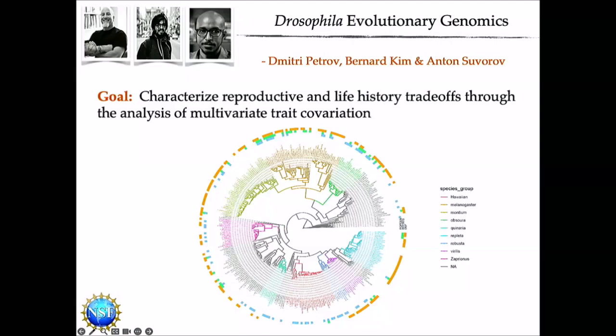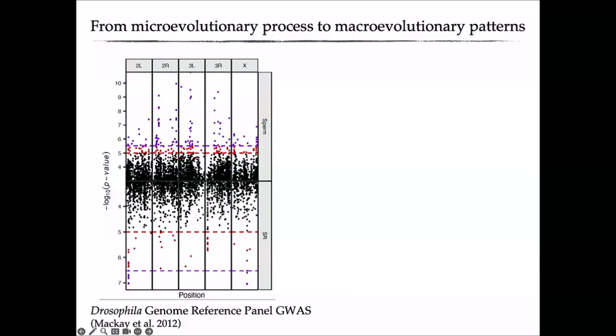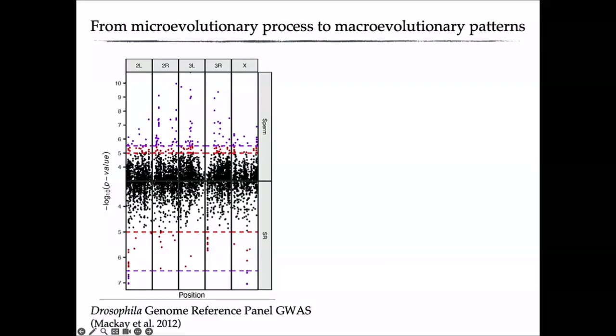The idea is to do broad-scale phenomics and understand how reproductive traits co-vary — the trade-offs between reproductive evolution and other life history traits. This will also be integrated with GWAS studies using the DGRP: we've just finished DGRP analyses for sperm length and seminal receptacle length, with a Manhattan plot showing significant loci for these two traits. The goal is to integrate intraspecific genetic architecture analyses for particular traits with broad-scale evolutionary patterns.